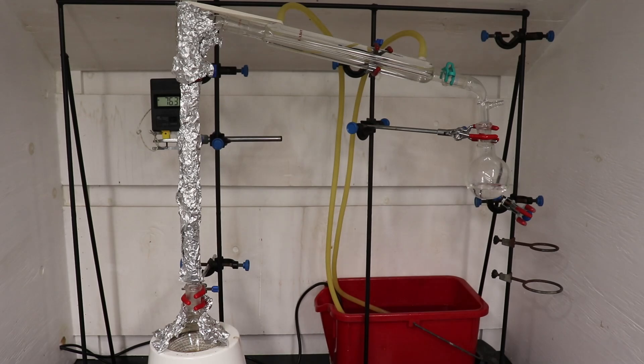To push over the last of the ethanol, I insulated the fractional column using aluminum foil. Shortly after, the rate of distillation slowed down, and the stillhead temperature began dropping.